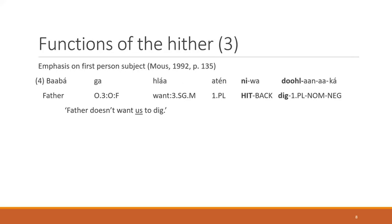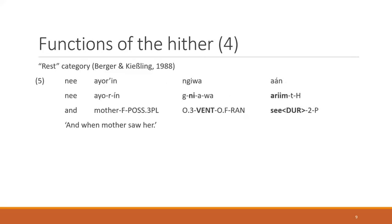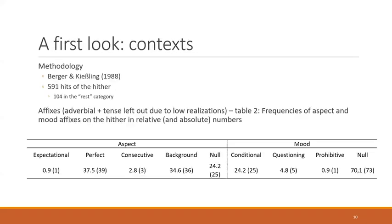Not all examples fit into these three categories. In example five, 'when mother saw her,' there is no first person subject, no verb of movement, and no imperative. So the question is: what is the hither doing there? The first step I took in answering this was to look at the context of the hither. My methodology was as follows: I took the Berger and Kiesling corpus from 1988, a collection of narratives, and extracted all instances of the hither. There were 591 of them, and I categorized these into the three known categories and the rest category, which contained 104 occurrences.